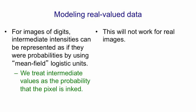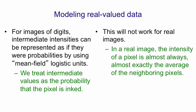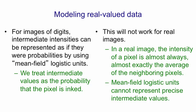However, it won't work for real images. In a real image, the intensity of a pixel is almost always, almost exactly, the average of its neighbors. So it's got a very high probability of being very close to that average and a very small probability of being a little further away. And you can't achieve that with a logistic unit. Mean field logistic units are unable to represent things like the intensity is 0.69, but very unlikely to be 0.71 or 0.67. So we need some other kind of unit.